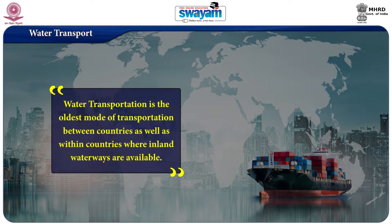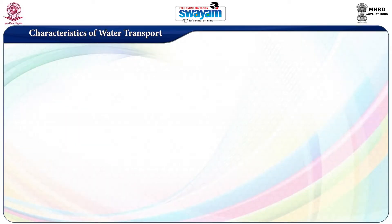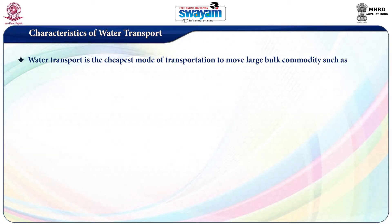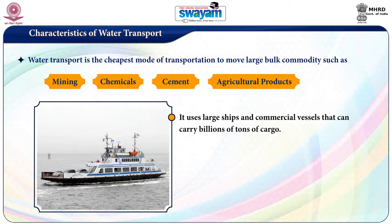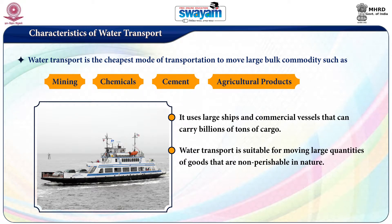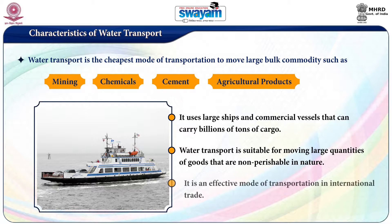Water transport: water transportation is the oldest mode of transportation between countries as well as within countries where inland waterways are available. The characteristics of water transport: water transport is the cheapest mode of transportation to move large bulk commodities such as mining products, chemicals, cement, and certain agricultural products. It uses large ships and commercial vessels that can carry billions of tons of cargo. Water transport is suitable for moving large quantities of goods that are non-perishable in nature. It is an effective mode of transportation in international trade.